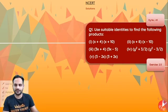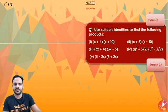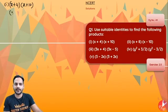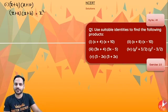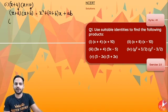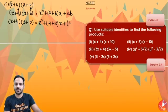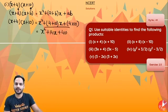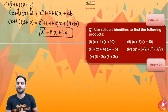The first one is x plus 4 into x plus 10. So you can clearly see it is the identity x plus a into x plus b, and this identity is equal to x square plus a plus b into x plus ab. So here a is equal to 4, b is equal to 10. So x plus 4 into x plus 10 will be equal to x square plus 4 plus 10 into x plus 4 into 10. So you have got x square plus 14x plus 40.